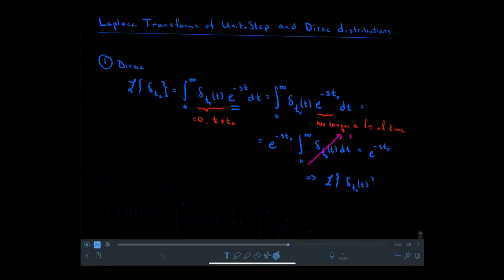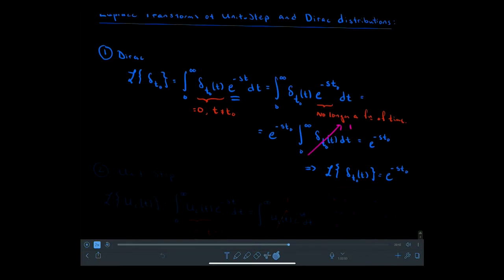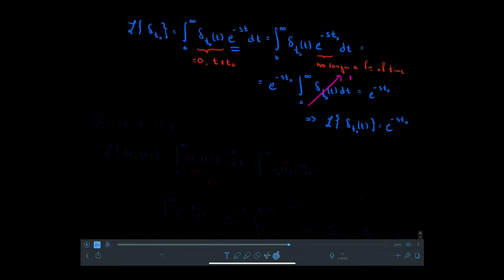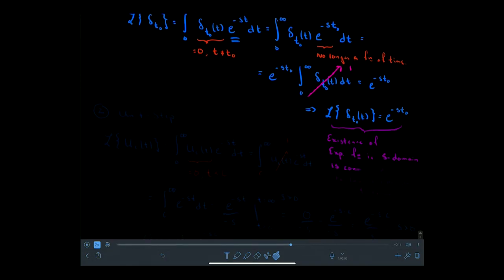I use the word function, but here I mean distribution. Now, knowing that delta is connected to steps because it represents a sudden change in the system in the time domain, the appearance of exponential functions in the s-domain is connected to quick changes in the t-domain. This is the first time in these videos we've seen e^{-s} appear in the Laplace side, indicating some sort of abrupt change related to step functions.